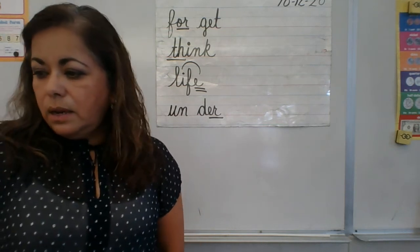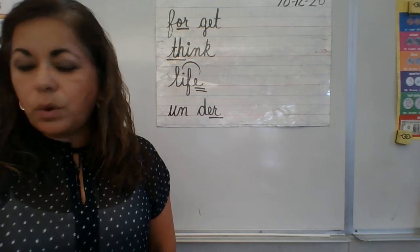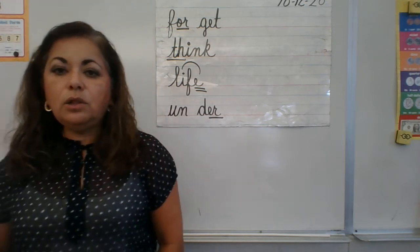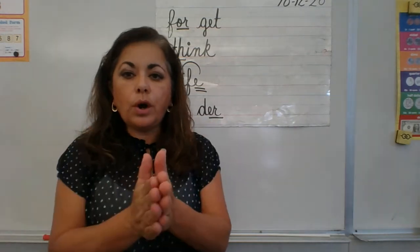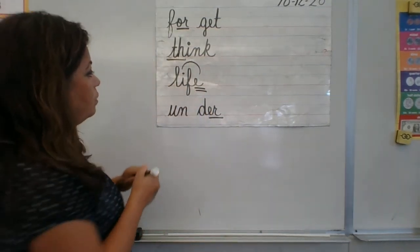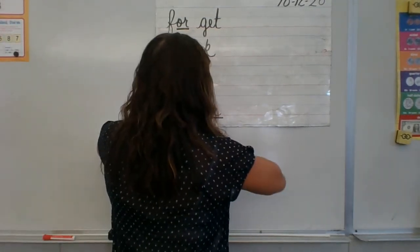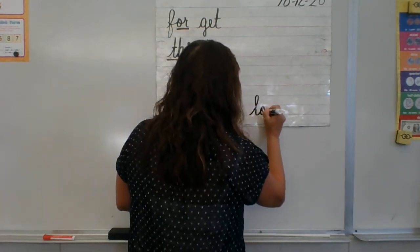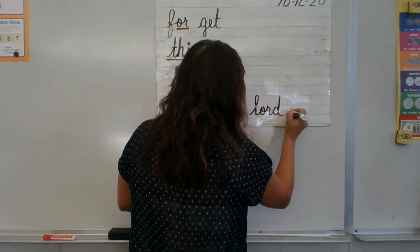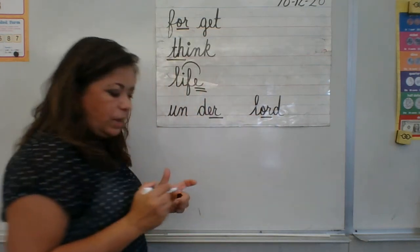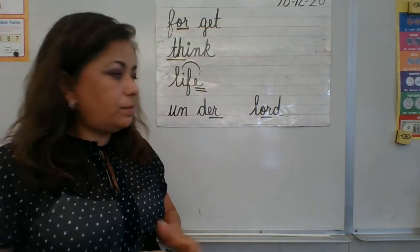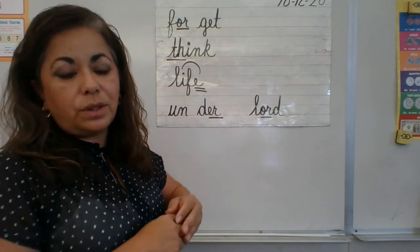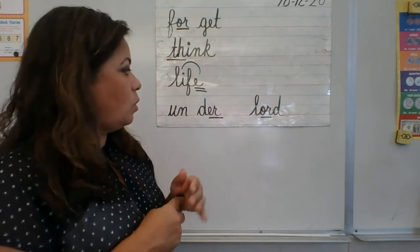And number five, your word is 'lord.' Lord — one syllable. We have 'or' as in lord — that's the multi-letter phonogram, and the rule word we use is 'or' as in lord.